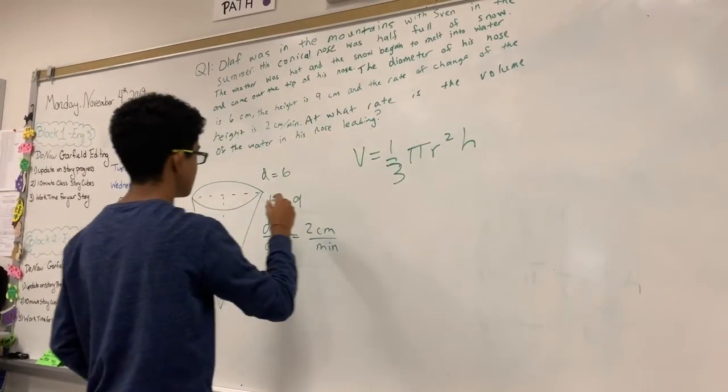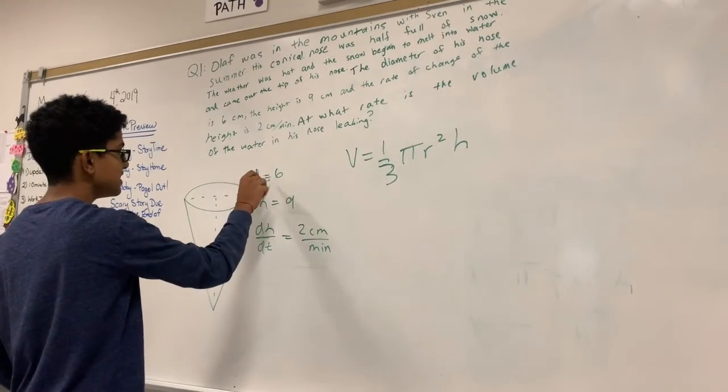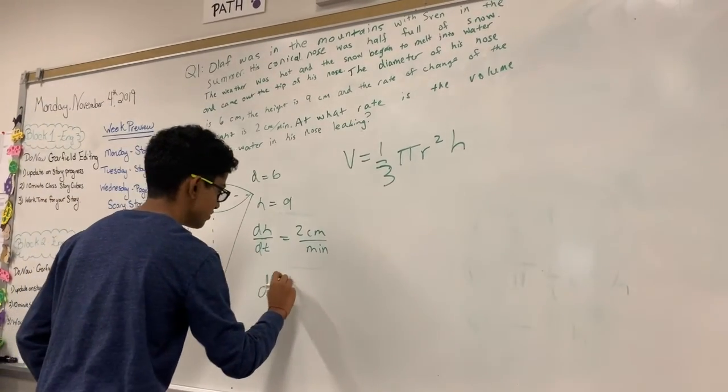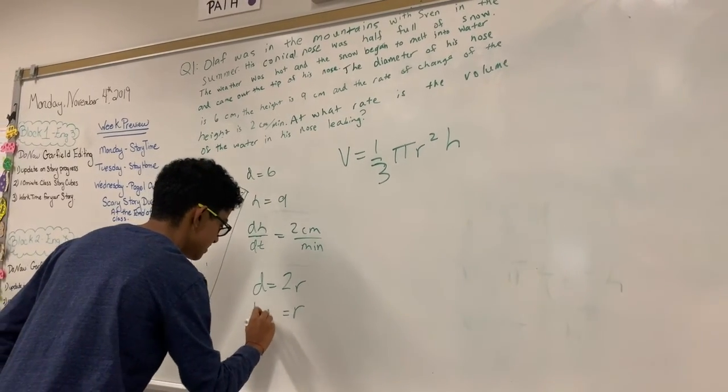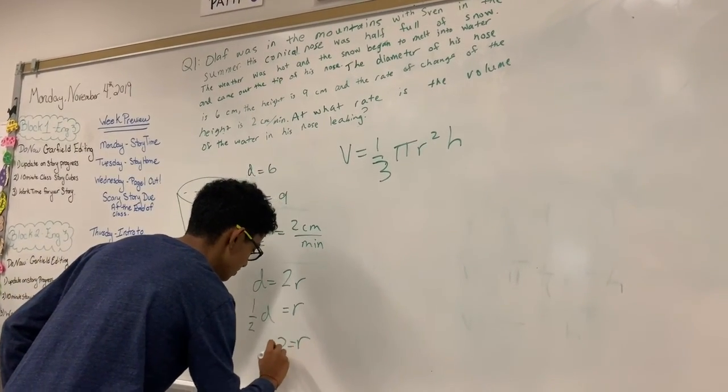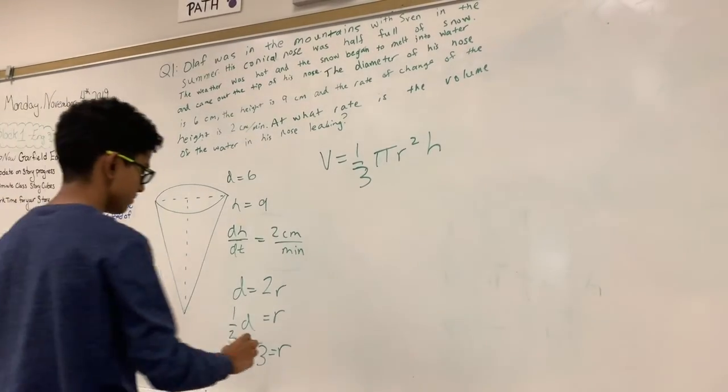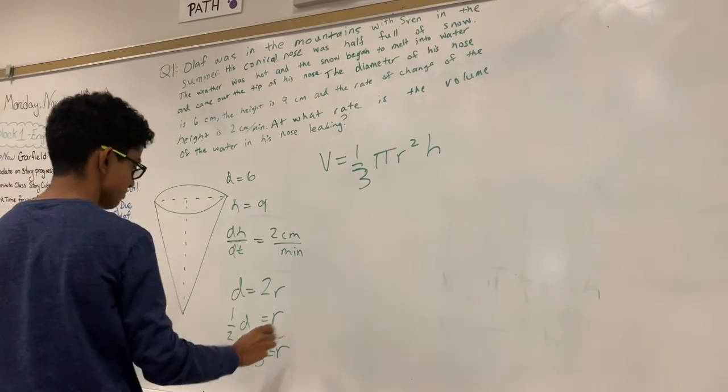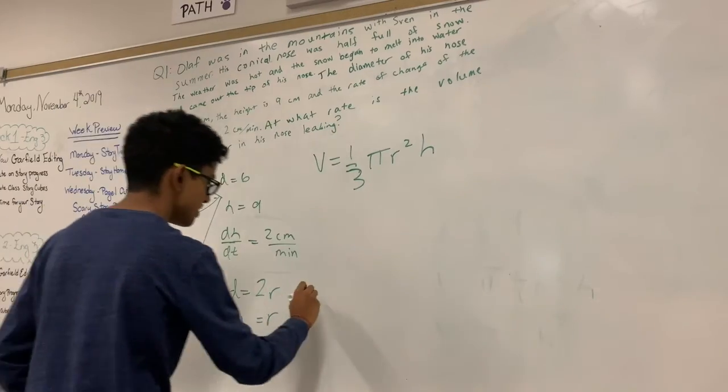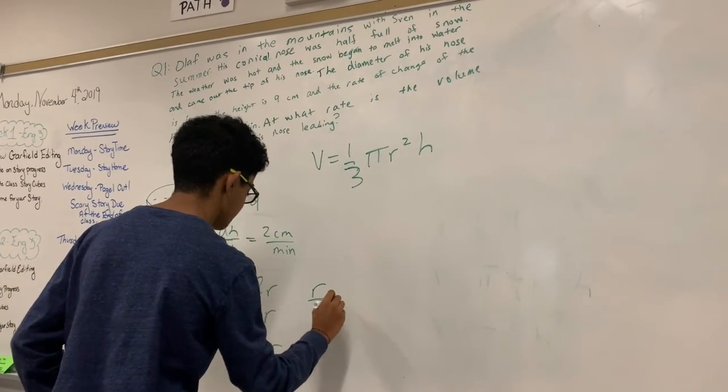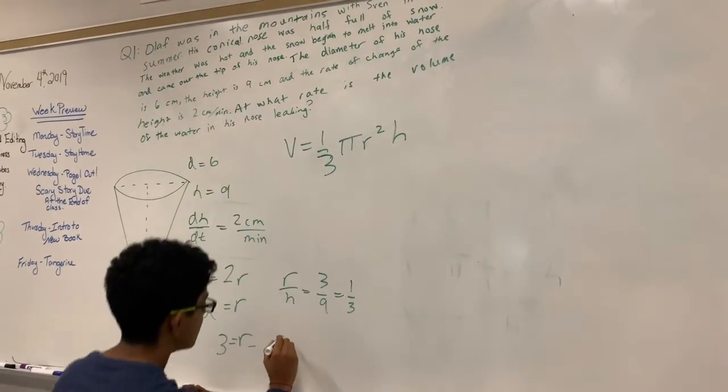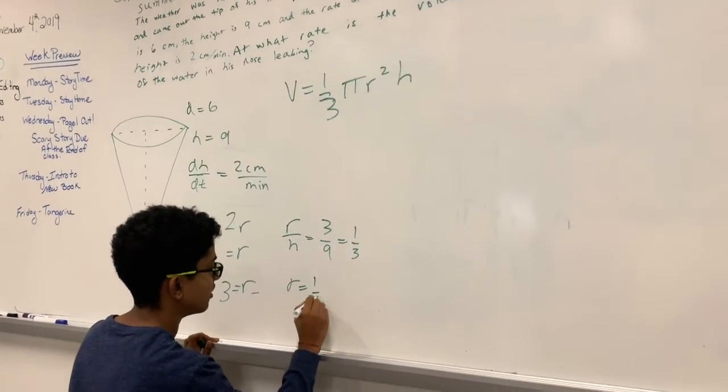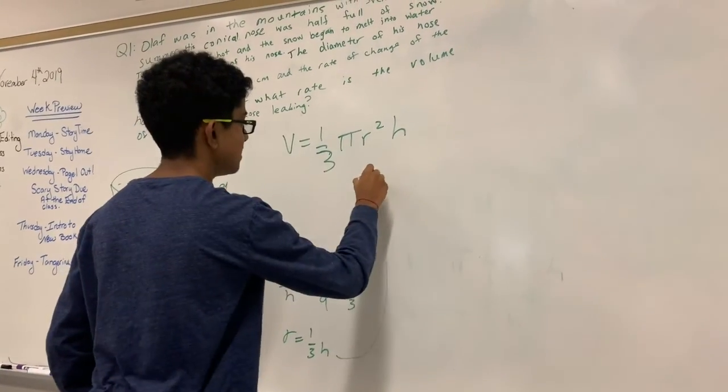So now we have to first find what r is. We know d equals 2 times r, which means r equals 1 half of d, which makes r equal to 3. So now we plug it back in and make a ratio of radius and height. So r over h equals 3 over 9, which is equal to 1 third. So r equals 1 third h.